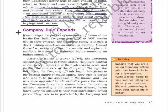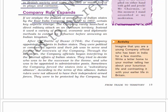Analyzing the process of annexation of Indian states by the East India Company from 1757 to 1857, the company rarely launched direct military attacks on unknown territory. Instead it used a variety of political, economic, and diplomatic methods to extend its influence before annexing an Indian kingdom. After the Battle of Buxar in 1764, the company appointed residents in Indian states - political or commercial agents whose job was to serve and further the interests of the company. Through residents, company officials began interfering in the internal affairs of Indian states, trying to decide who was to be the successor to the throne and who was to be appointed in administrative posts.